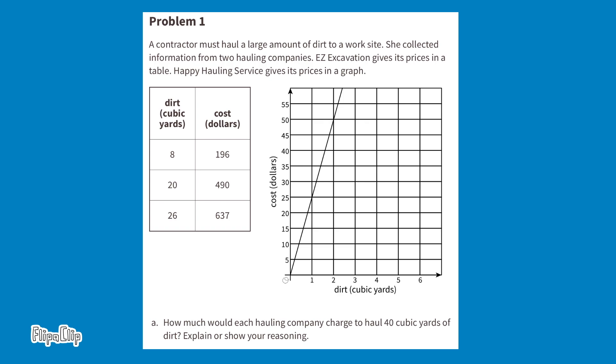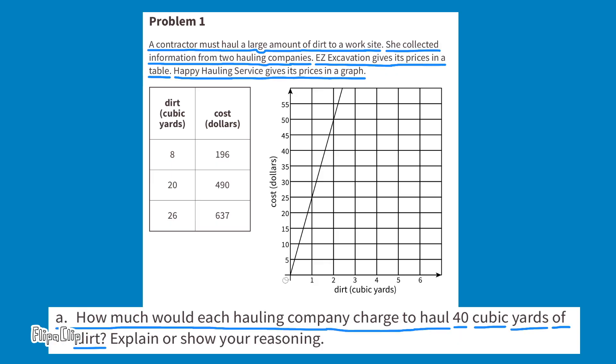Problem number one. A contractor must haul a large amount of dirt to a work site. She collected information from two hauling companies. Easy excavation gives its prices in a table. Happy hauling gives its prices in a graph. How much would each hauling company charge to haul 40 cubic yards of dirt? Explain or show your reasoning.